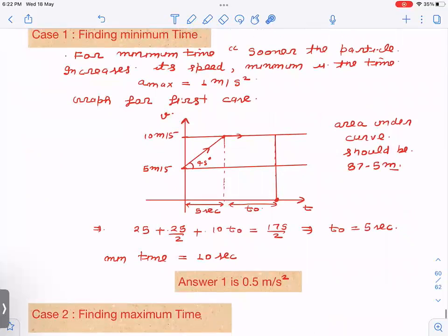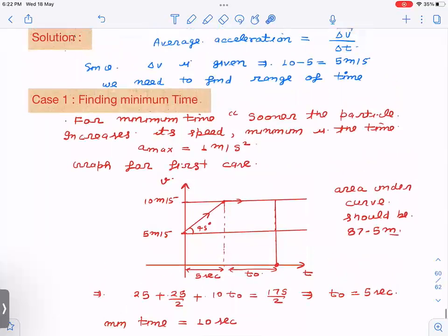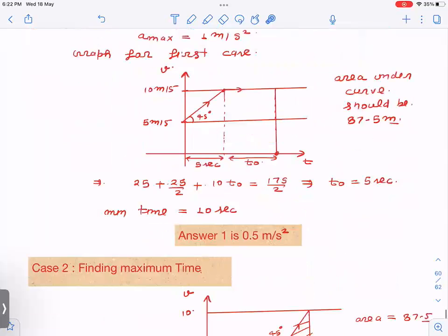Since this angle is 45 degrees, this is also 5 seconds. We'll find out t₀ from the area under the curve. This area is 25, this area is 25/2, and this area is 10t₀. This equals 175/2 (87.5 as 175/2). t₀ comes out to be 5 seconds, so minimum time is 10 seconds. If it is 10 seconds with initial velocity 5, the first answer is the maximum value of average acceleration, which is 0.5 meters per second squared.